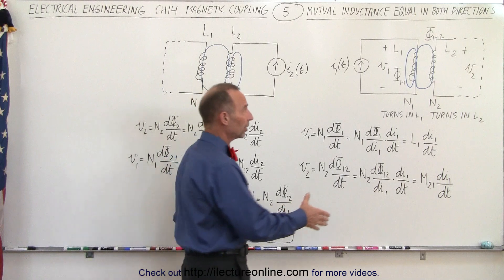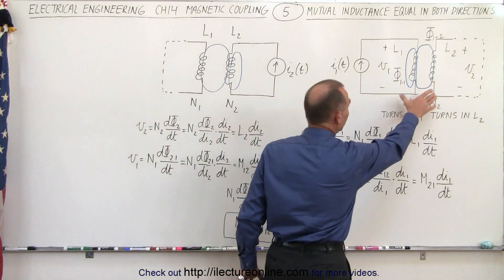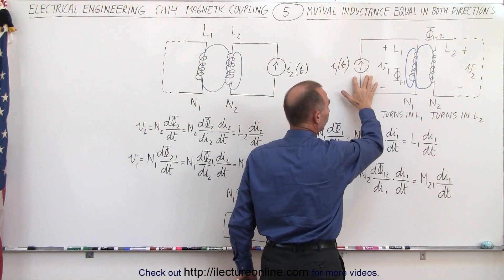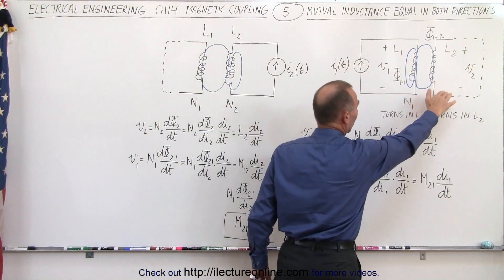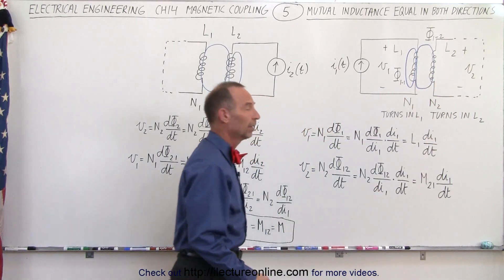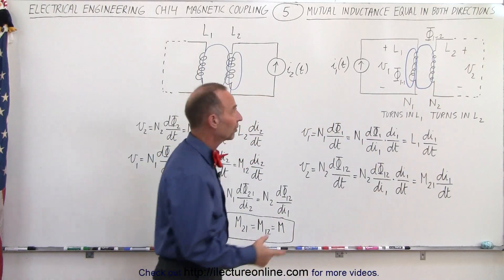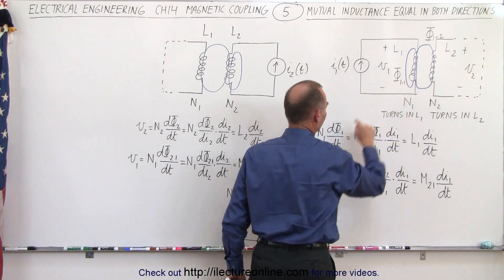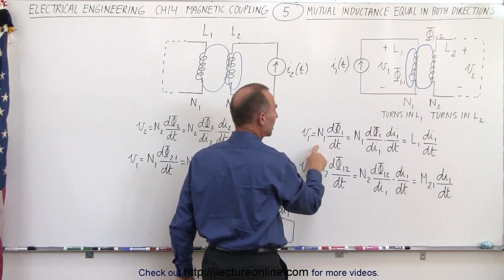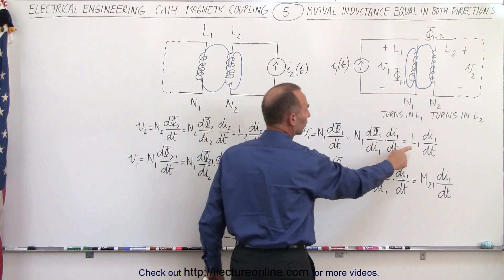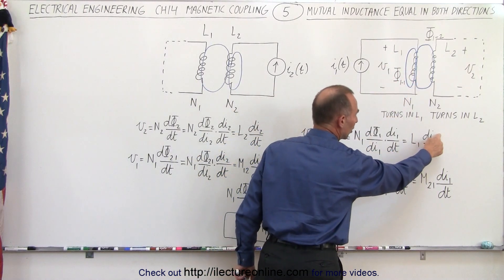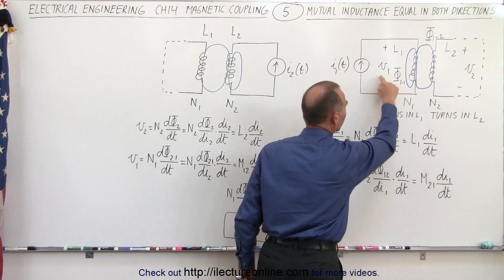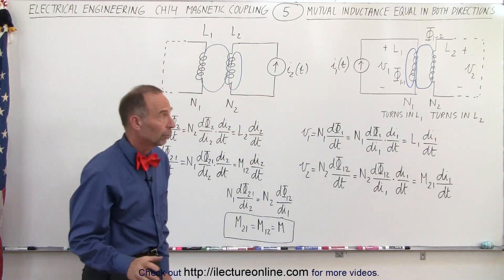This is what we saw in the previous video. We had two circuits: the circuit on the left had the current source, and the circuit on the right simply had an inductor. The voltage across the inductor on the first circuit was simply equal to the self-inductance times the rate of change of the current with respect to time in that first circuit.